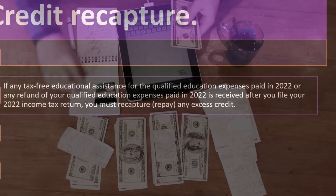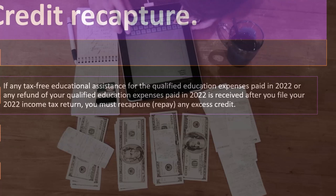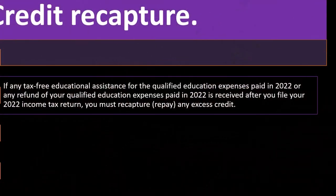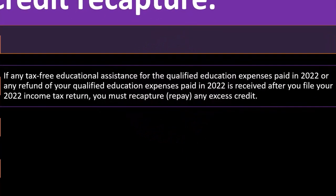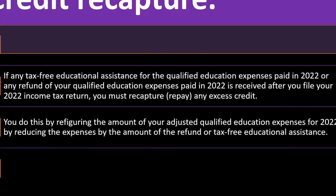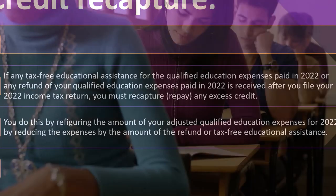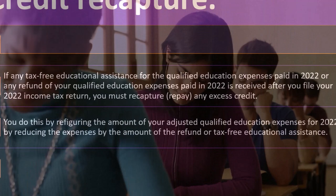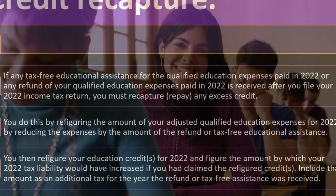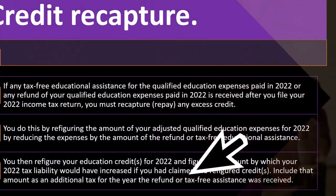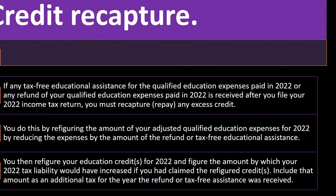It's called the credit recapture — they're recapturing your credit like a lion that they put in a cage. If any tax-free educational assistance for the qualified education expenses paid in 2022, or any refund of your qualified education expenses paid in 2022, is received after you file your 2022 income tax return, you must recapture — repay — any excess credit. You do this by refiguring the amount of your adjusted qualified education expenses for 2022 by reducing the expenses by the amount of the refund or tax-free educational assistance, and then figuring your education credits for 2022 and the amount by which your 2022 tax liability would have increased if you had claimed the refigured credit.